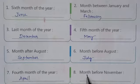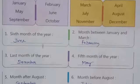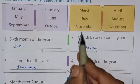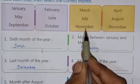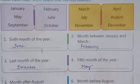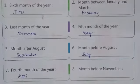The next question: the month before November. Which month comes before November? Looking at the table of months — before November, the month is October. So write down the answer: October.